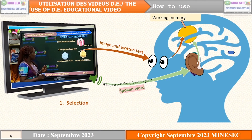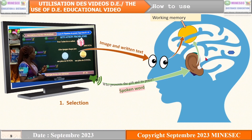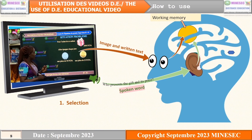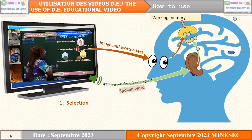How do we use a pedagogic video in a learning and teaching situation? The first step consists in selecting information through the sensory memory, made up of eyes and ears. The information goes through the ears and, from the board, goes directly to the working memory. Those information are channeled to the working memory, or short-term memory. However, the working memory has a limited capacity of storage.